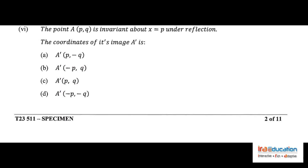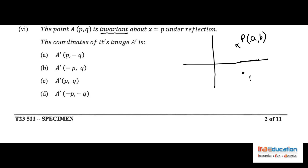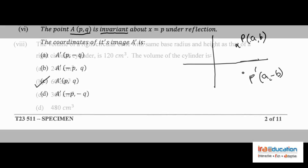Problem 6 states point A with coordinates (p, q) is invariant. When a point is invariant, its image is itself — it doesn't move. Normally, the image of point (a, b) reflected in the x-axis is (a, minus b). But since the point is invariant, the image equals the original point (p, q). Therefore option C is correct.